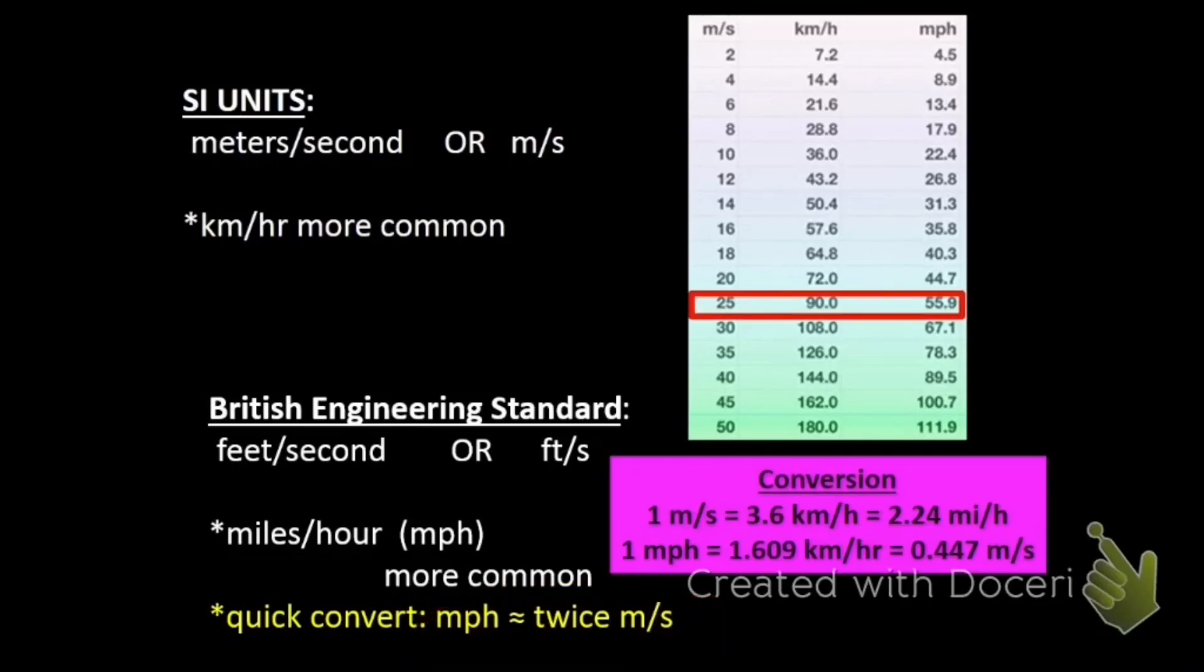And just to give you a quick conversion factor, miles per hour is about twice the meters per second. That's not an exact conversion, but it's going to get you in the ballpark if you're checking an answer to see if it's reasonable or not. So if you get an answer that's 25 meters per second and you double it, that's about 50 miles per hour. You can see it's not exactly 50 miles per hour, but it's going to give you a ballpark. So if I get that answer for the speed that someone's walking, that's probably unreasonable. If I get that answer for the speed of a car, it probably makes sense.